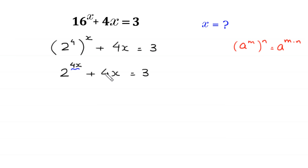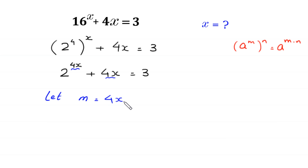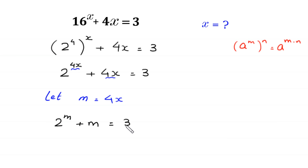Now here we have 4x and here we also have 4x. So we let m equal to 4x and substitute m into this equation. The equation becomes 2 to the power m plus m is equal to 3.